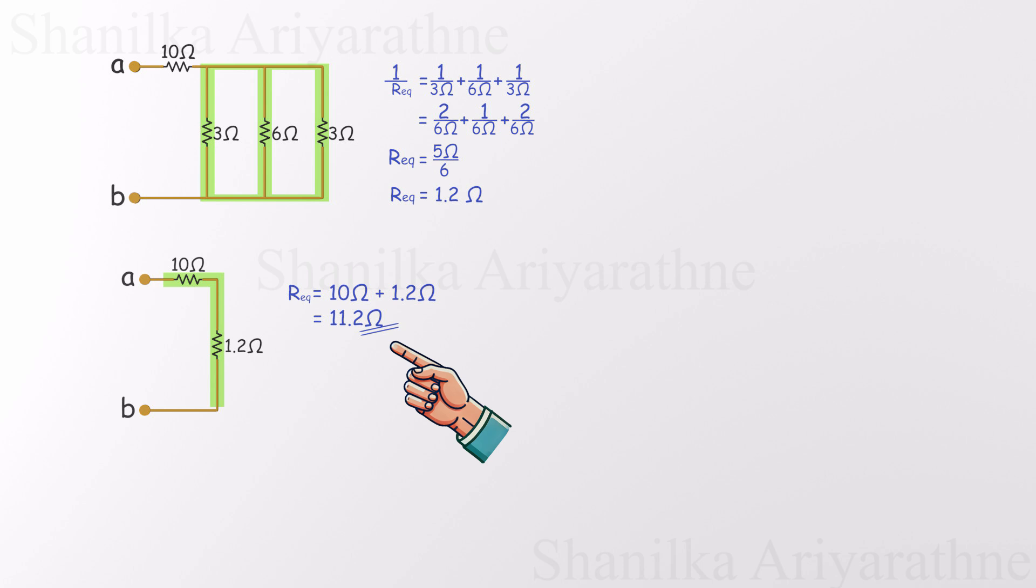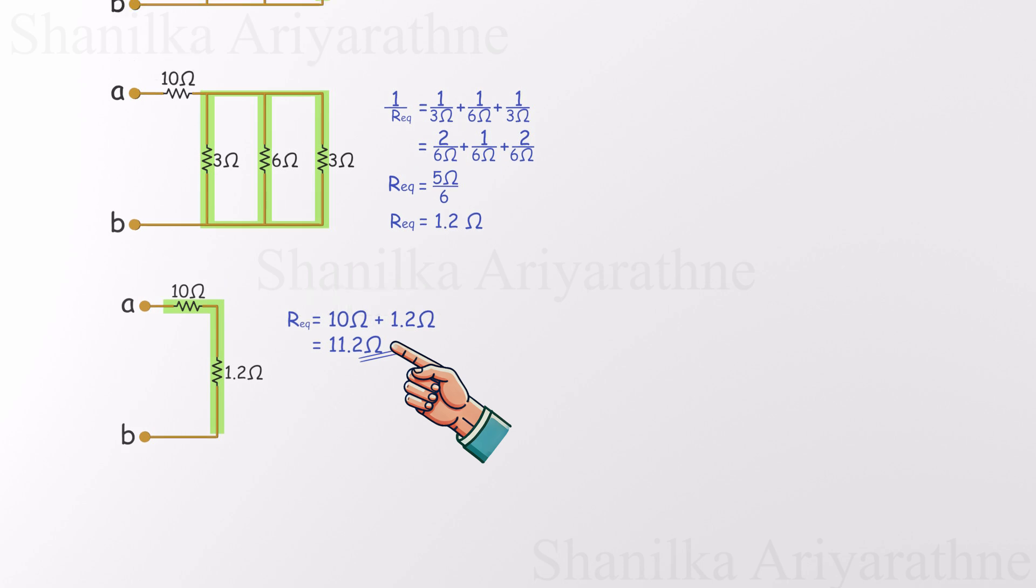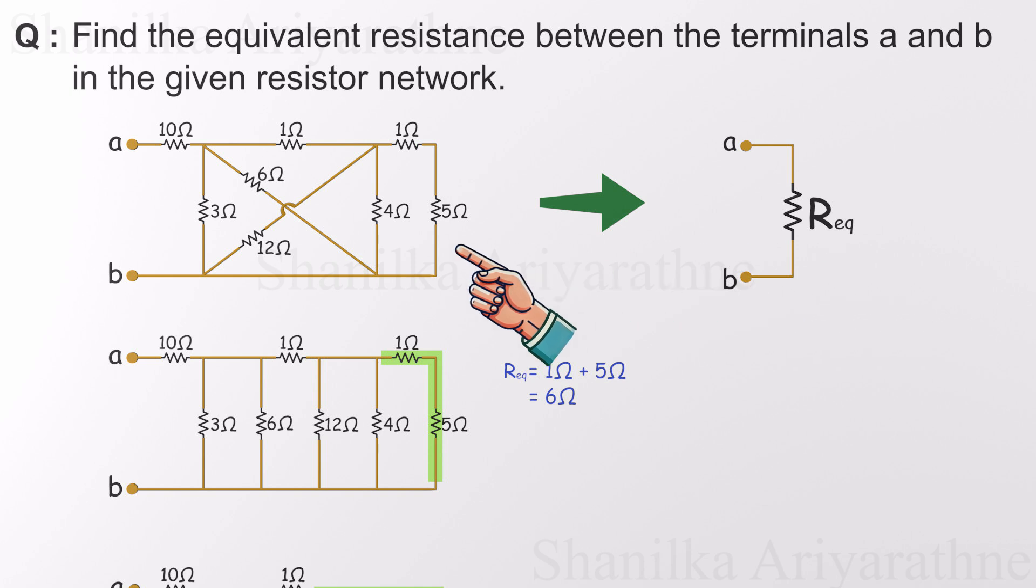And that's it. This is our final, fully simplified circuit. So instead of dealing with that entire original resistor network, we can replace it all with a single 11.2 ohm resistor and the circuit will behave exactly the same. Same voltage, same current, just a lot easier to work with.